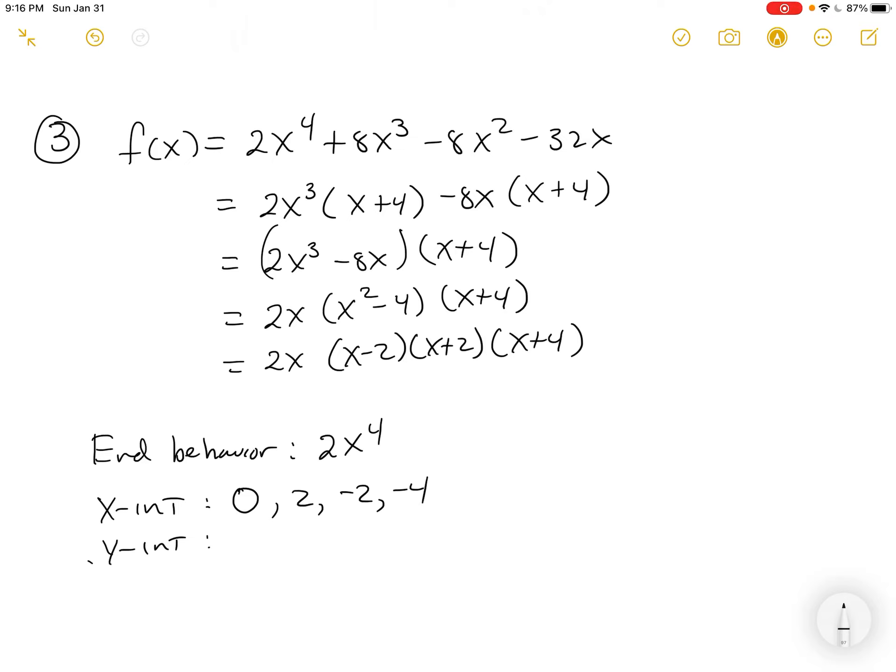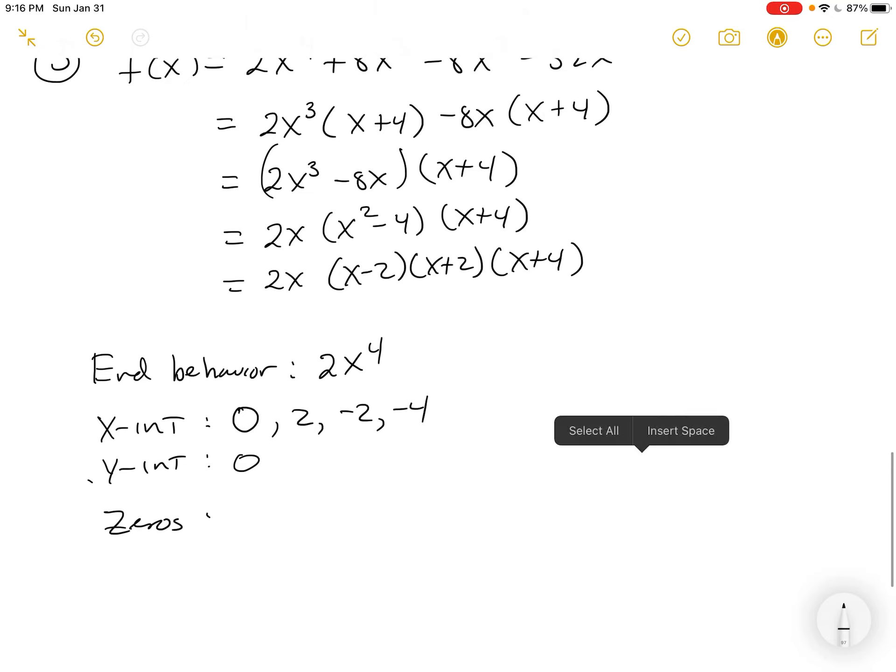The y-intercept, if you plug 0 in for x, you're going to get 0 because of that initial 2x there. Or you can look across the top and see every term has an x. So, it's going to be 0. No problems. What are the zeros of the function? Well, we've already listed them out.